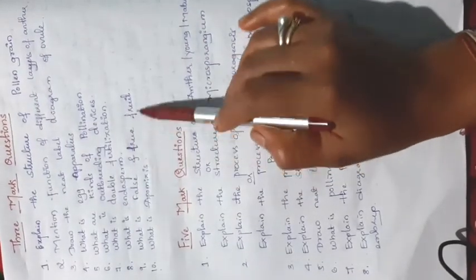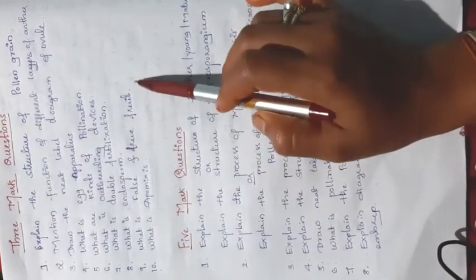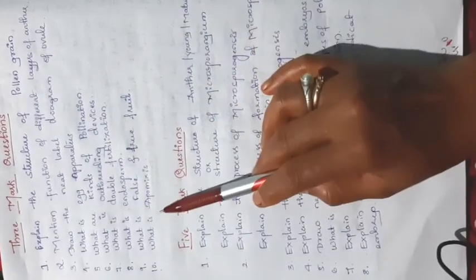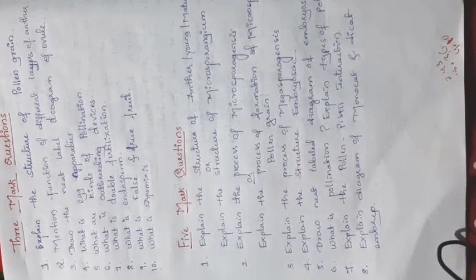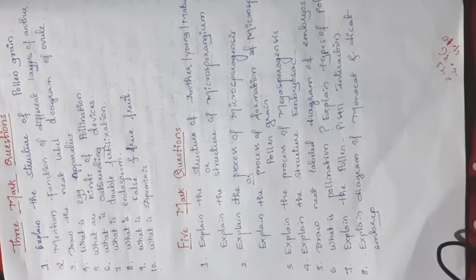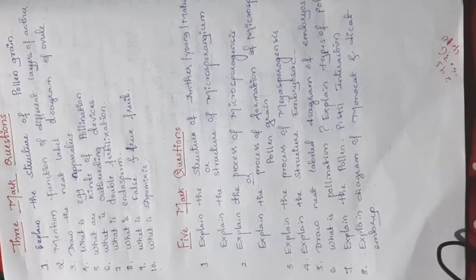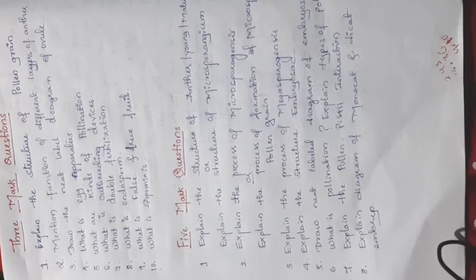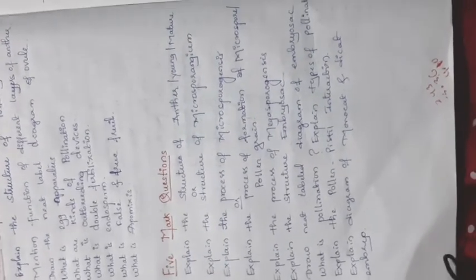Endosperm is used for nourishment of the developing embryo and is triploid in nature. We already discussed false and true fruit in one-mark questions. For three marks, apomixis should be explained: how a seed is formed without any fertilization.